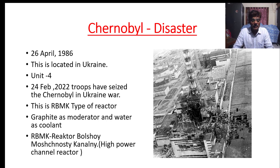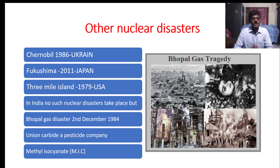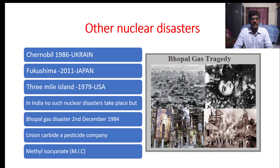RBMK is a Russian name meaning 'High Power Channel Reactor.' The next nuclear disaster was at Fukushima, Japan in 2011. Before that, in 1979, there was the Three Mile Island disaster in the USA. So the three major nuclear disasters are: 1979 USA (Three Mile Island), 1986 Ukraine (Chernobyl), and 2011 Japan (Fukushima).